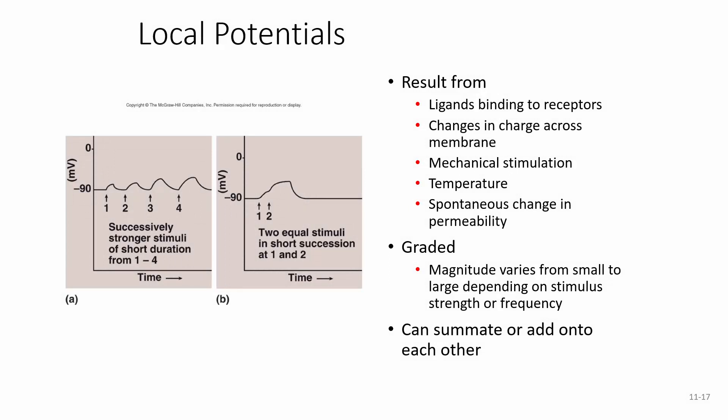Local potentials can result from many different things. One cause is ligands binding to receptors, opening channels so ions cross through those channels, changing the charge across the membrane. Other things that can create a local potential or action potential include mechanical stimulation — for instance, a pressure receptor: if you compress that pressure receptor, or other receptors that might be bent or stretched, that will trigger an action potential.